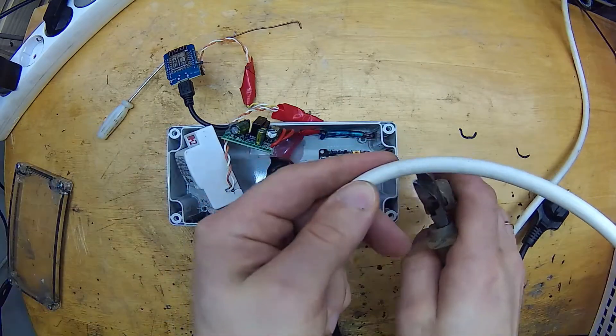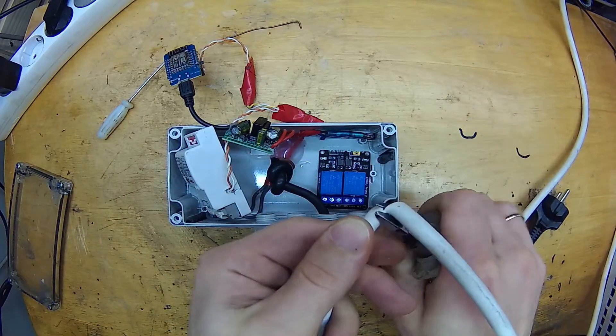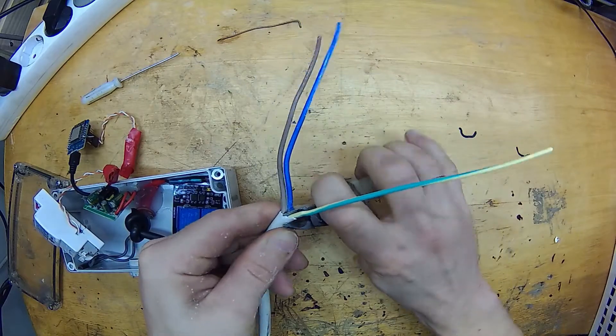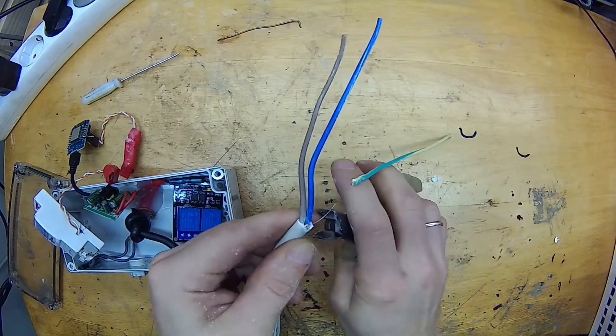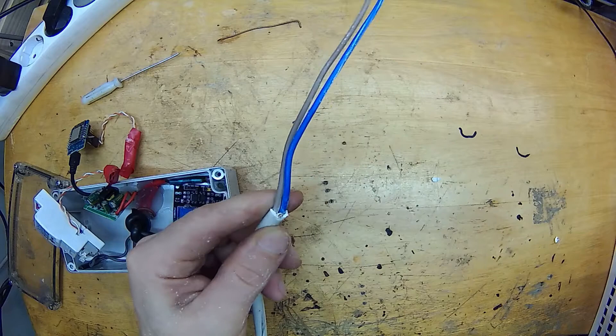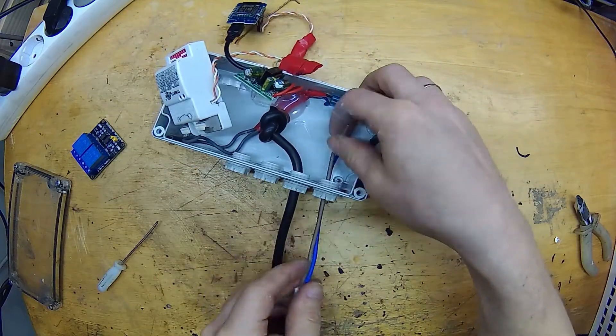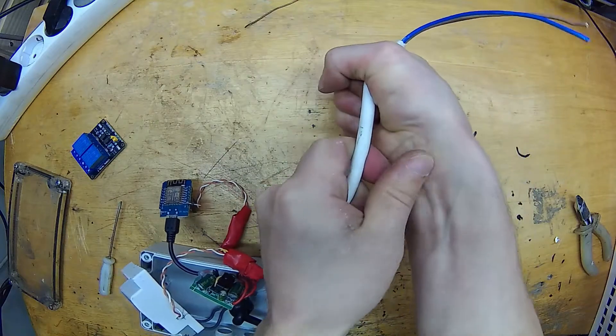So let's start with cutting and stripping the extension cord. I don't need the grounding wire since I know there is no grounding in that place where I'm going to install this system. Now I'm pulling wires inside the box and making a knot to protect them from accidentally slipping out.